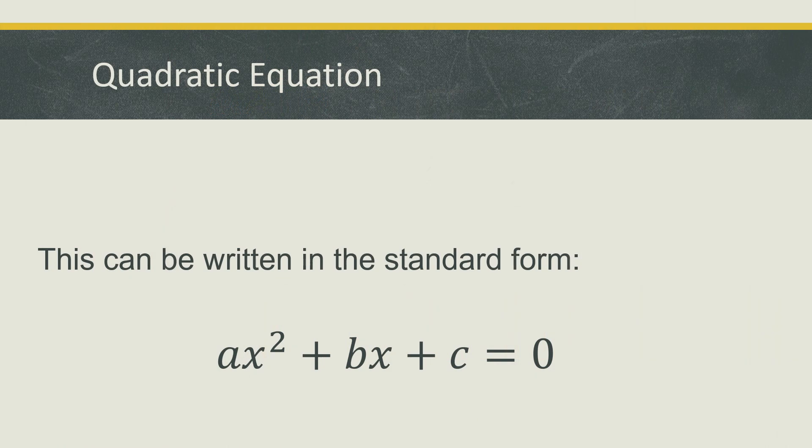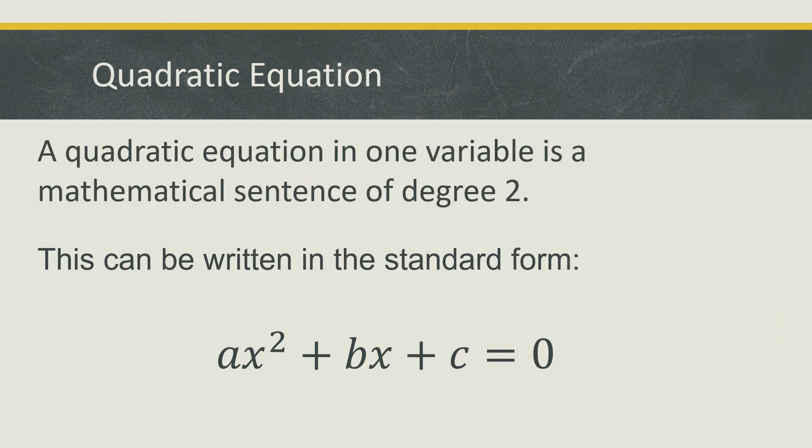Before we discuss the lesson, let us review first what is a quadratic equation. A quadratic equation in one variable is a mathematical sentence of degree 2. It is also called a second degree equation where the highest exponent is 2. This equation can be written in the standard form of ax² + bx + c = 0, where the values of a, b, and c are all real numbers.